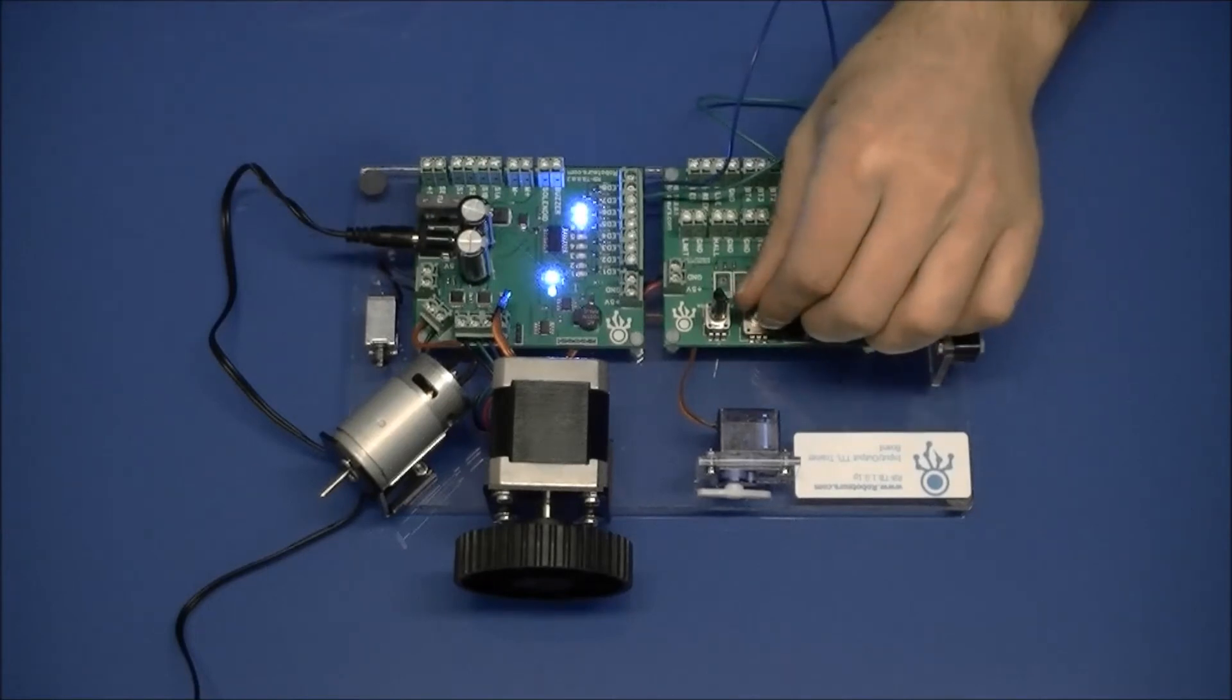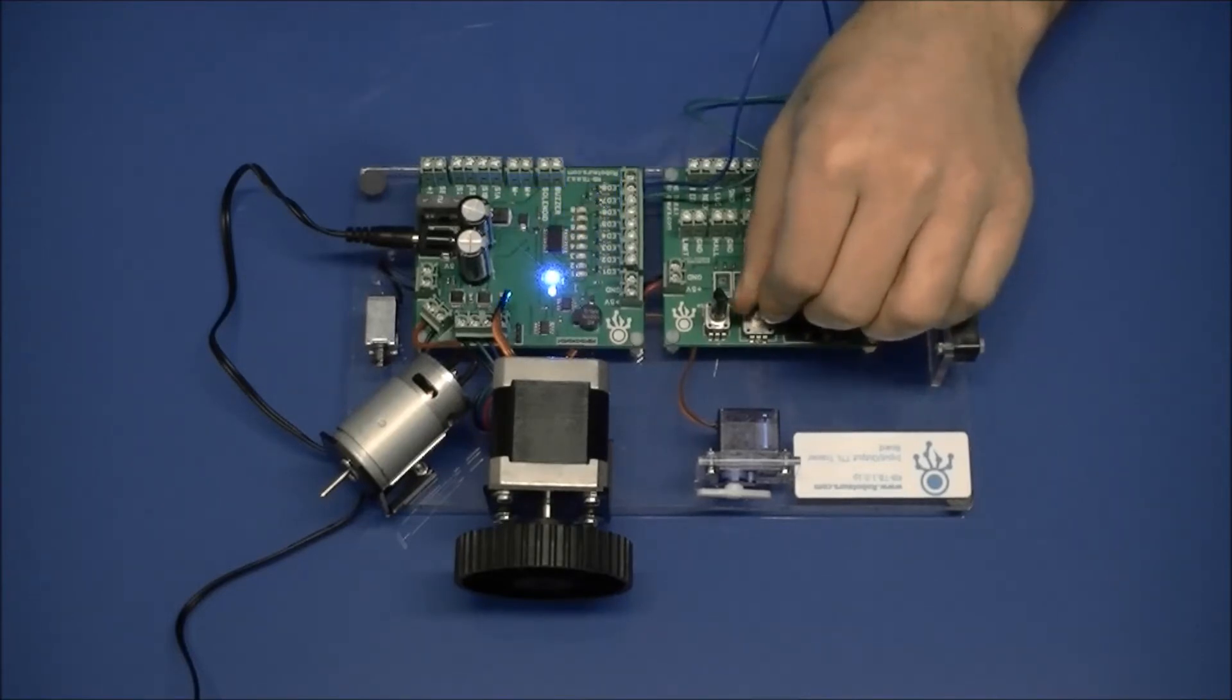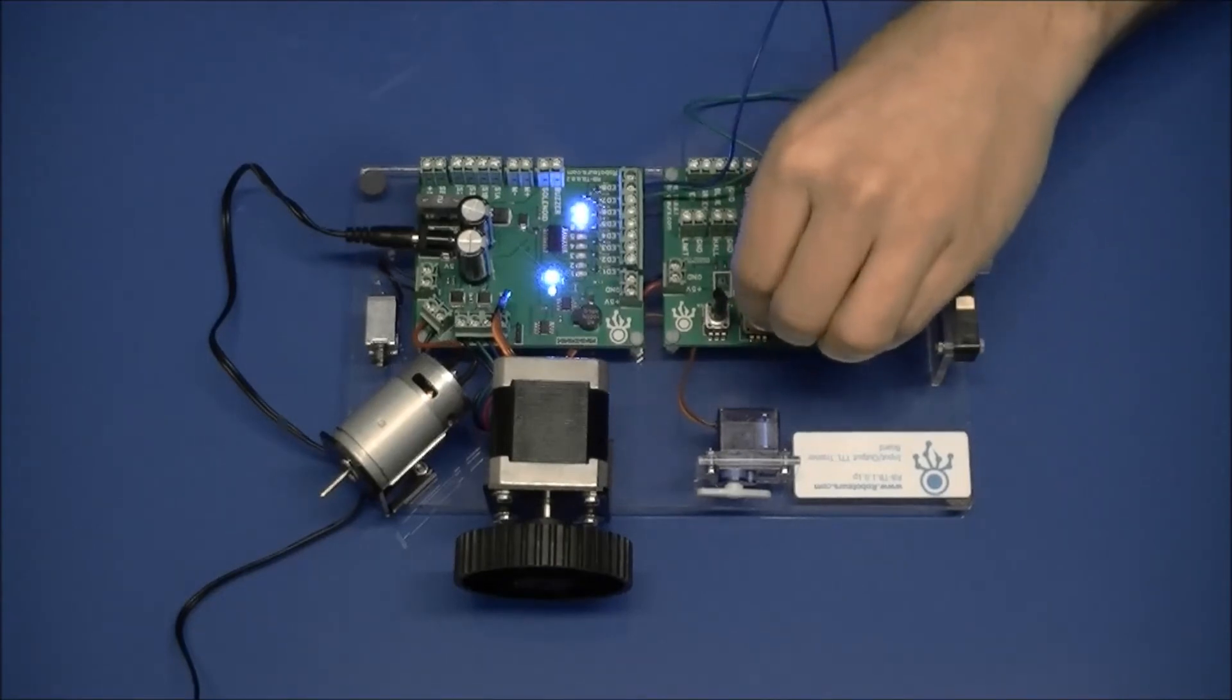So as you can see when I turn it, they blink out of phase. This is how you can sense direction. This can be used with microcontroller applications. You can see when it's going from the top and from the bottom.